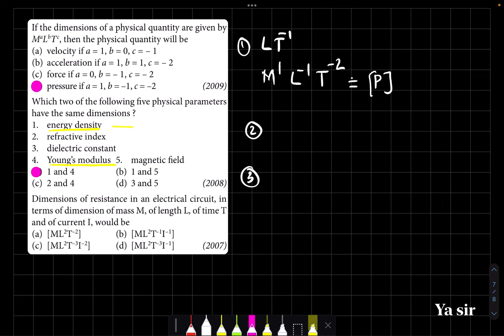Then third one, the dimensions of resistance in an electrical circuit in terms of mass, length, time, and current I. We know the resistance formula from Ohm's law, V by I. What is voltage actually? Work done by charge. So work done by charge into current I. What is work done formula?